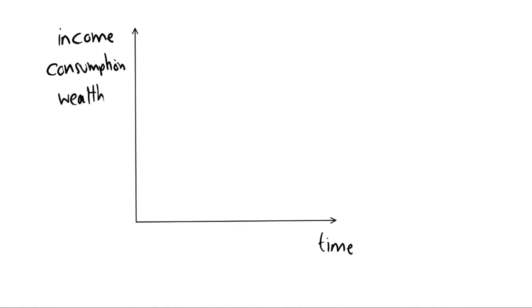So in order to get a bit more intuition about how all of this looks, we can draw a diagram where on the y-axis we have our income, our consumption, and our wealth at each period, and on the x-axis we have time.